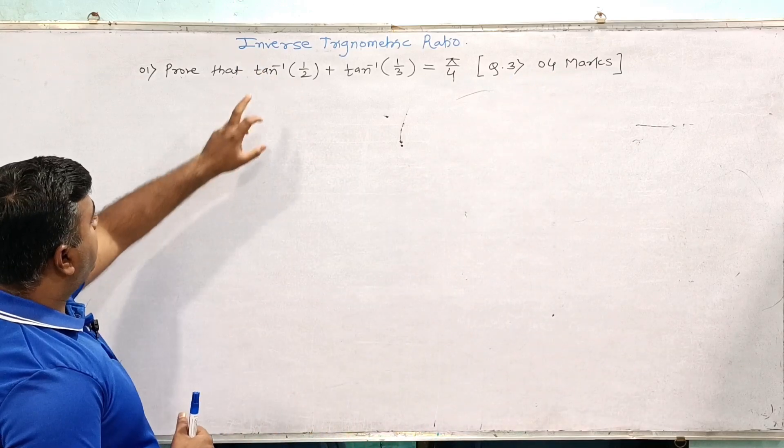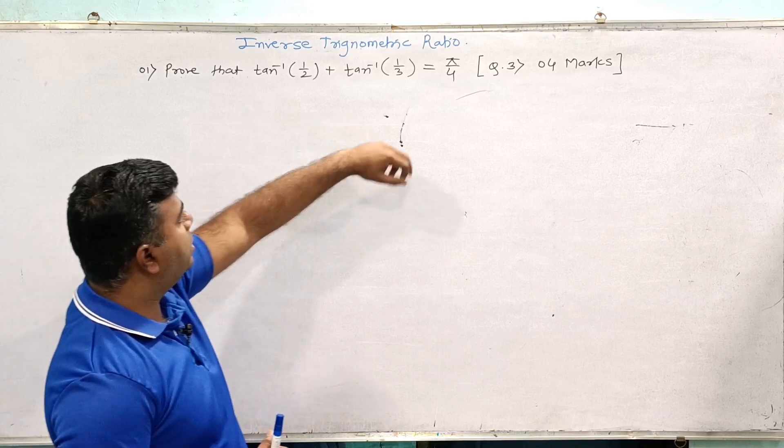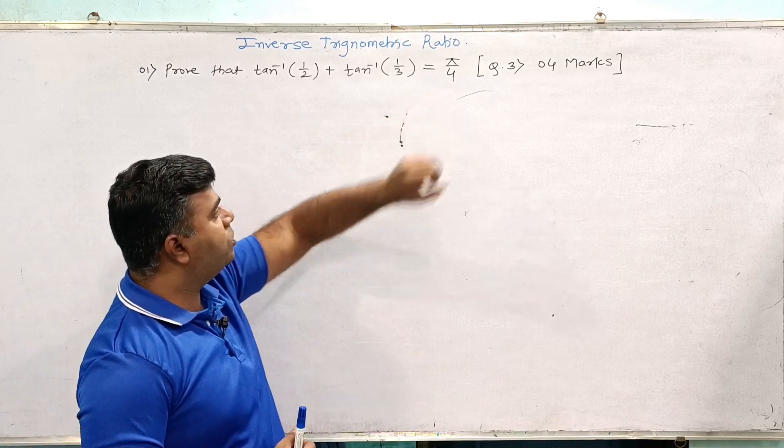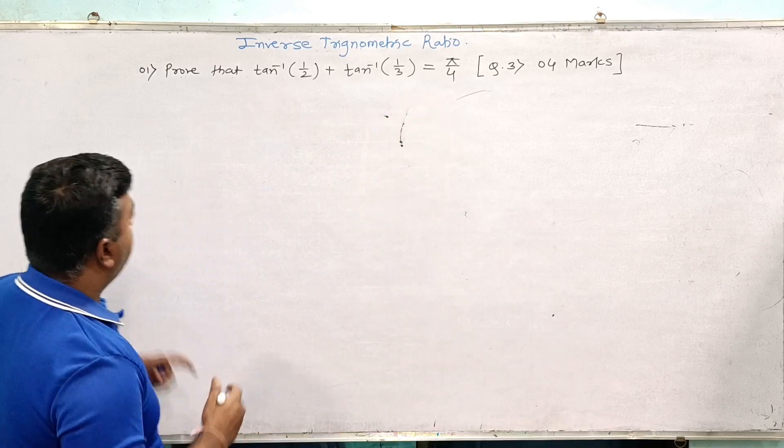The problem is: prove that tan inverse of 1/2 plus tan inverse of 1/3 is equal to pi by 4.